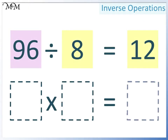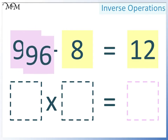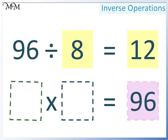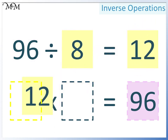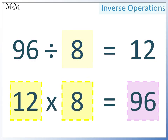Again, 96 must go here because it is the largest number. This time we'll write 12 here, and so 8 must go here. 12 times 8 equals 96.